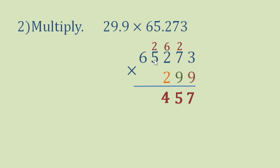9 times 5 is 45, plus 2 is 47. Bring down 7, carry 4. Then 9 times 6 is 54, plus 4 is 58. Now we finish multiplying 9 to all the digits in our multiplicand.